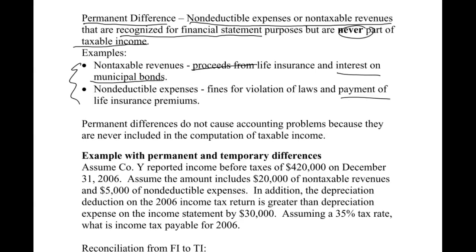Permanent differences do not cause accounting problems because they are never included in the computation of taxable income. They don't go into taxable income. However, we need to handle them on our reconciliation because they're included in financial income — we need to back them out so they're not included in taxable income. Let's look at an example.